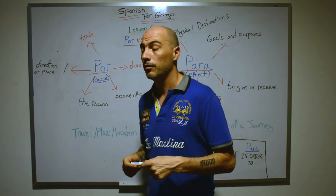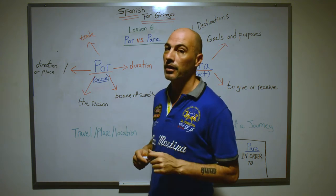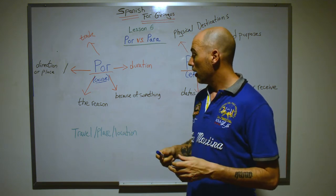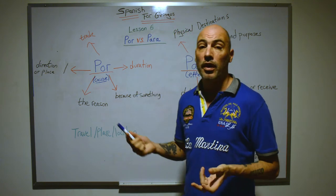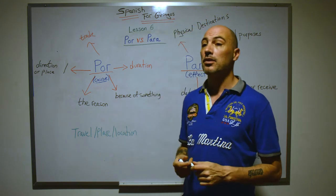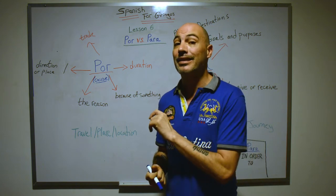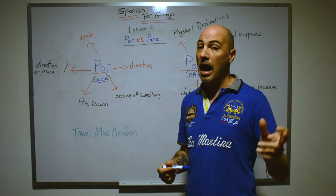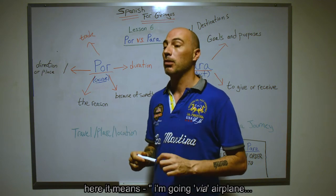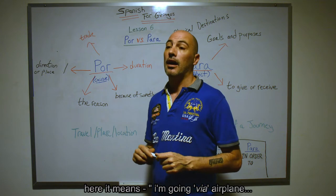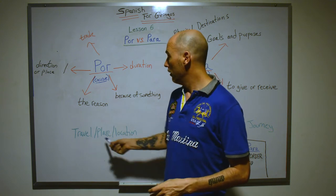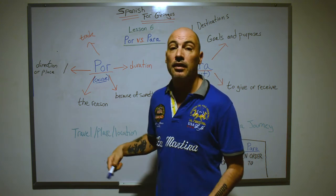For travel, place, or location — if you're talking about methods of travel, you use por. In English you say 'I'm traveling by train' or 'via train'; in Spanish you'd say me voy por el tren. Similarly, me voy por el avión — I'm going by airplane — or me voy a ir por el barco — I'm going to go by boat. Vamos por la playa is another example of por.